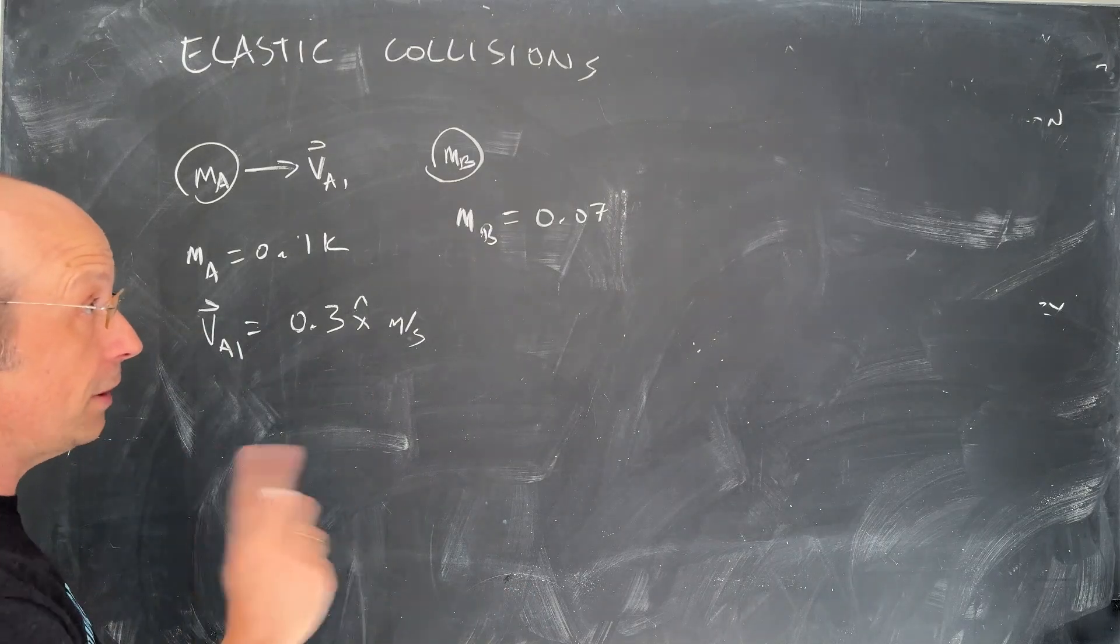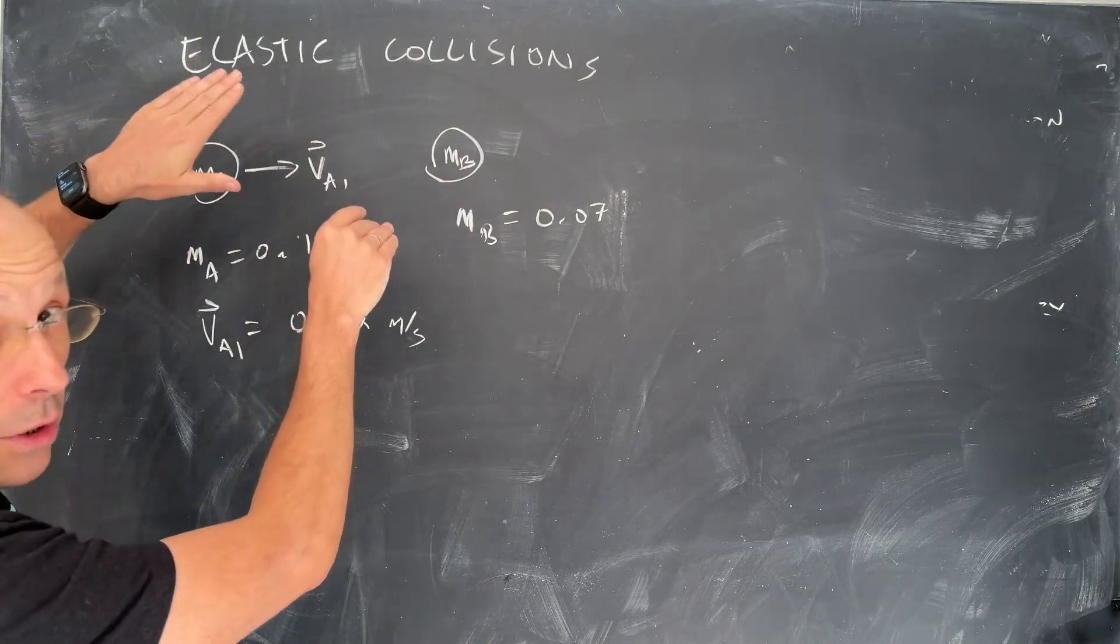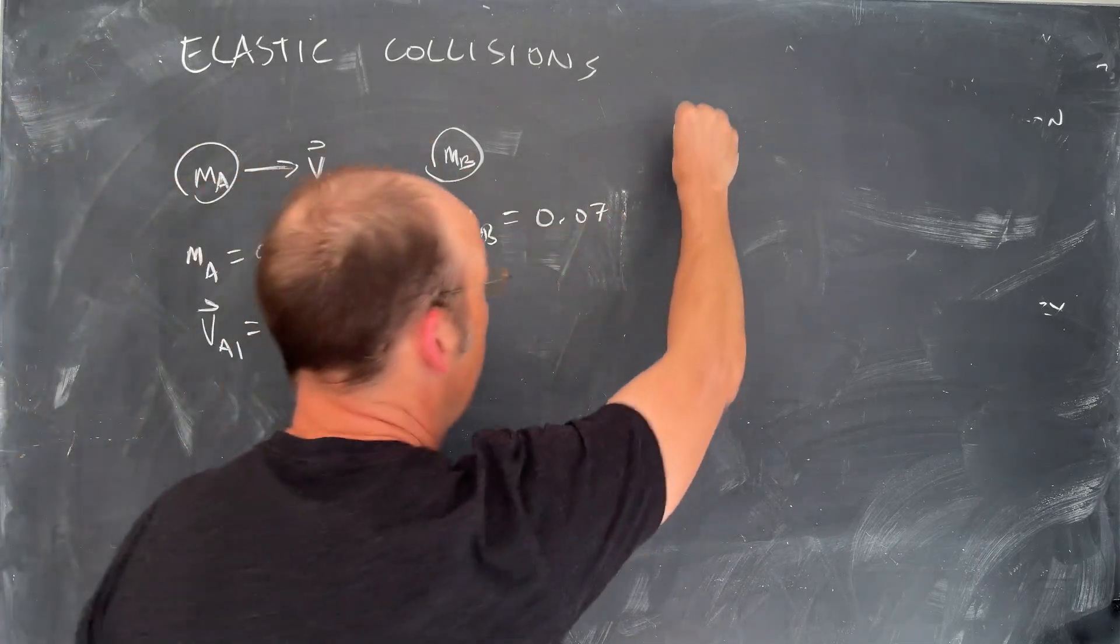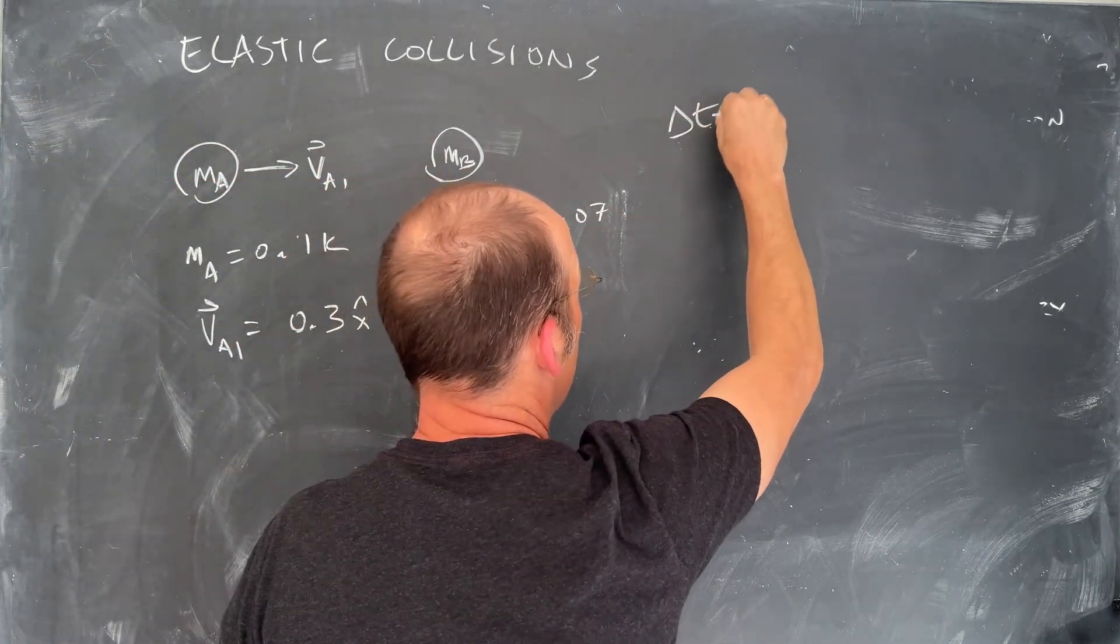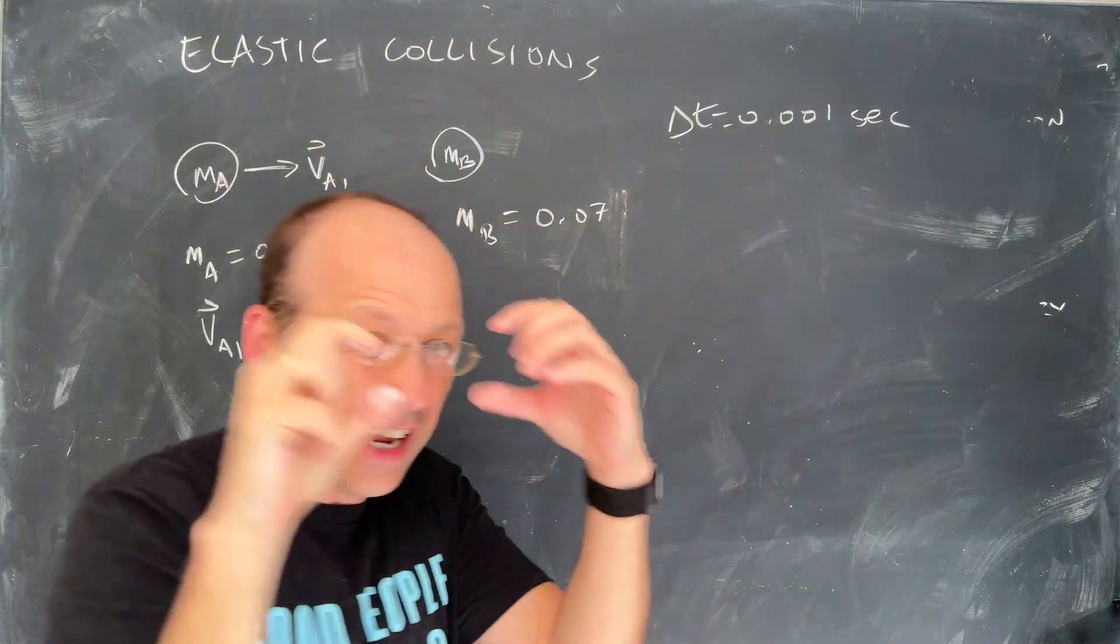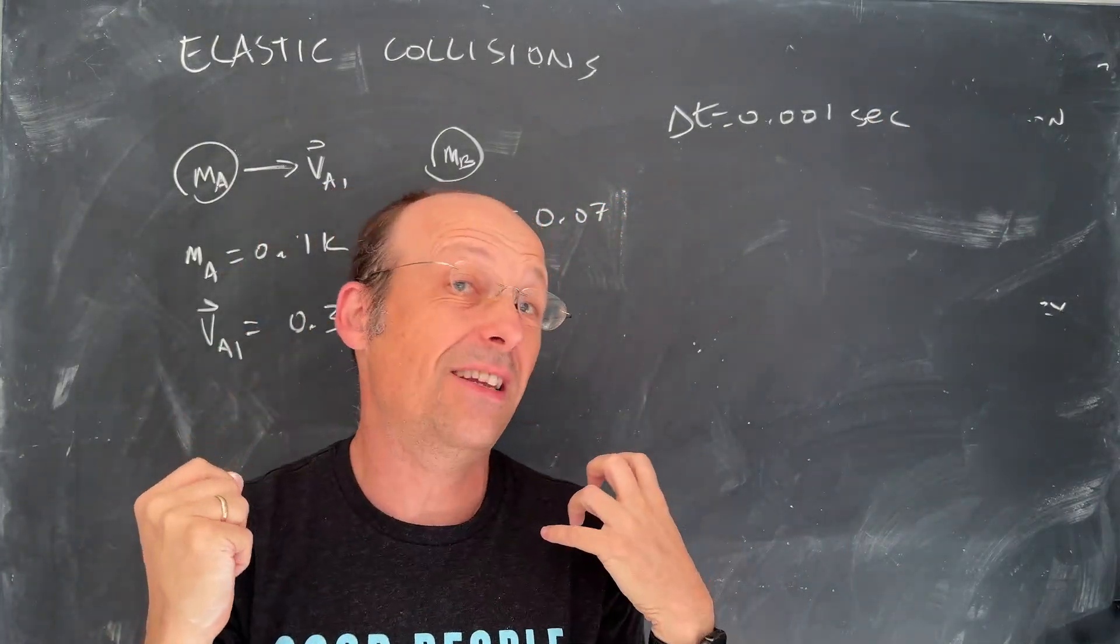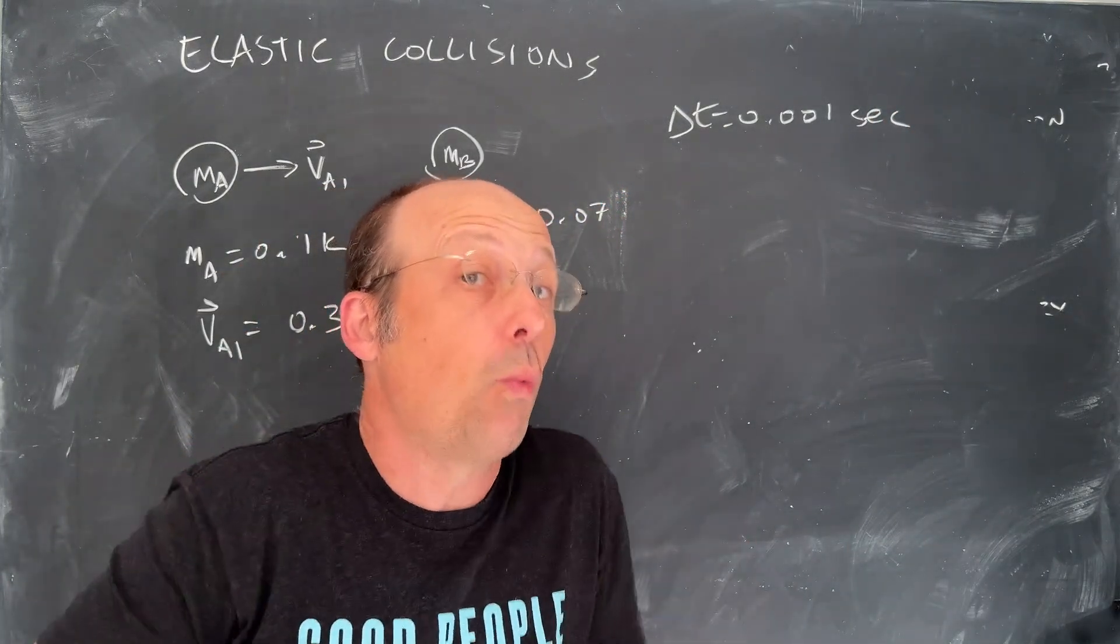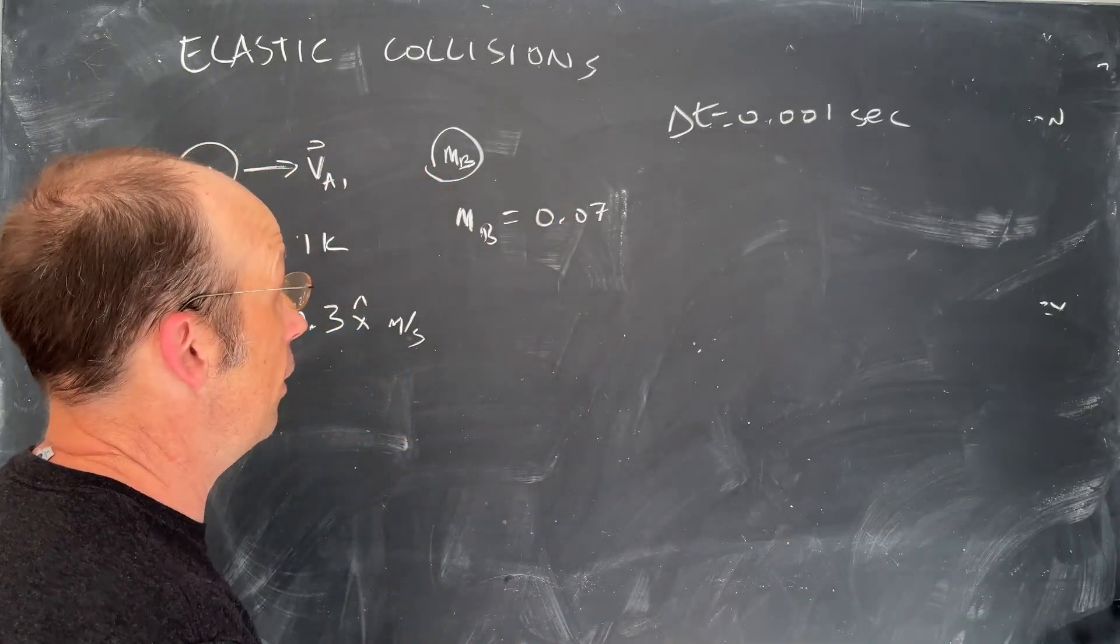Now the first thing I'm going to do is to break this into short time intervals. During each time, and this is going to be a really short time interval. Let's say delta T is 0.001 seconds. Because that collision could take a really short amount of time, and I don't want to mess it up. It'll still work, but I want it to be as good as possible.